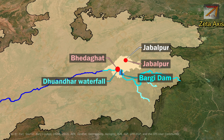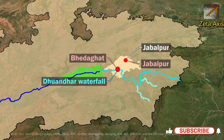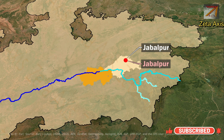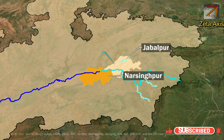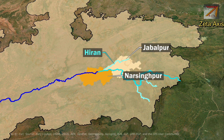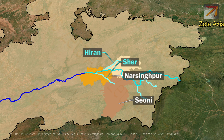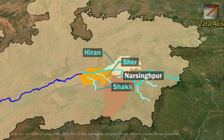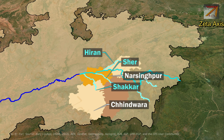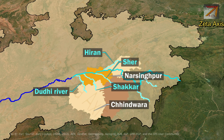From the valley, the Narmada enters its first fertile plain region, extending about 320 km till Narmadapuram. From Jabalpur, it enters Narsinghpur where the Hiran river (originating in Jabalpur) meets it. Within Narsinghpur, the Ser river (from Seoni) and the Sakkar river (from Chhindwara) also join Narmada. Further, the Duthi river, also originating from Chhindwara district, meets Narmada in Narsinghpur district.